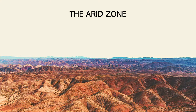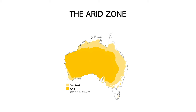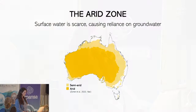I'm going to be talking about the arid zone. This is a photo from Adnyamathanha country in South Australia, which is in the arid zone. 70% of Australia is classified as either arid or semi-arid. In these regions, evaporation is really high and there's typically pretty limited rainfall, so surface water is really hard to come by, and we tend to rely on groundwater resources.